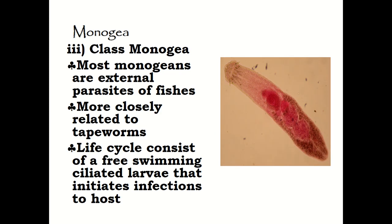Next is class Monogenea. Most monogeneans are external parasites of fishes, more closely related to tapeworms. Their life cycle consists of a free-swimming ciliated larva that initiates infection on the host.